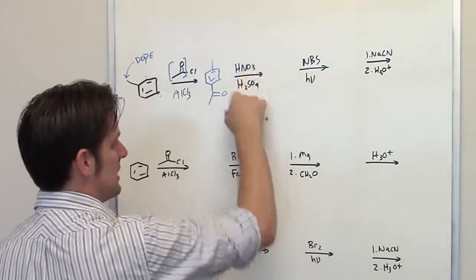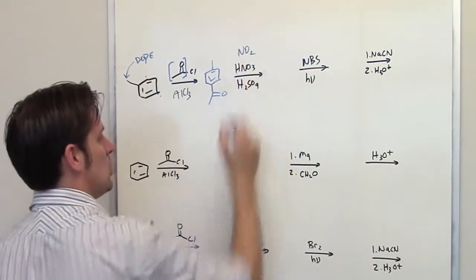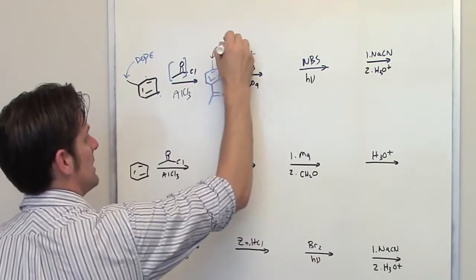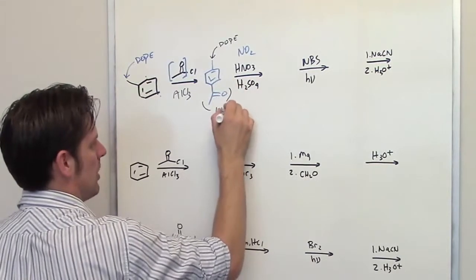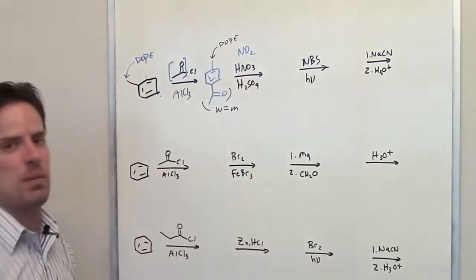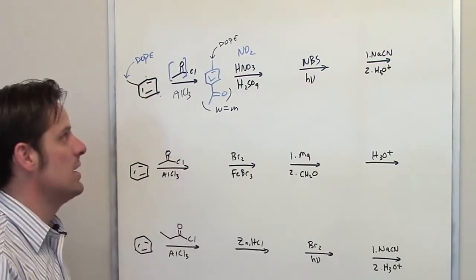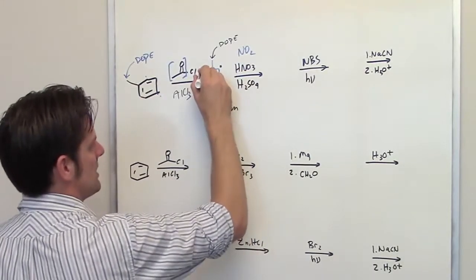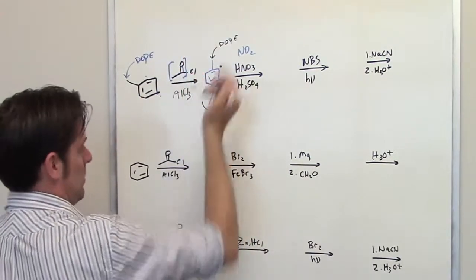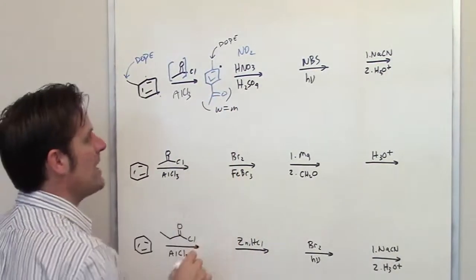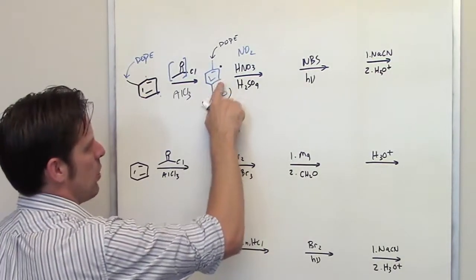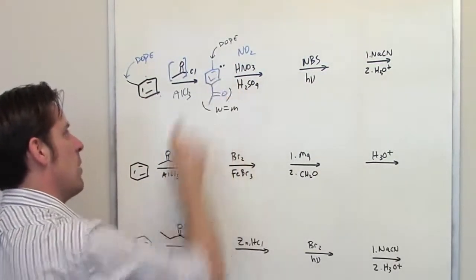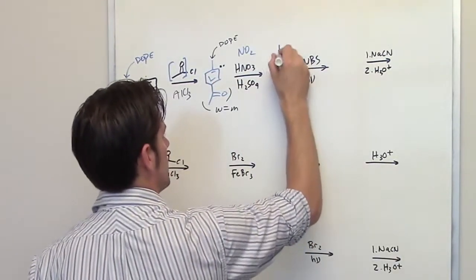Now I treat this intermediate with nitric acid and sulfuric acid, which places an NO₂ onto the ring. Where does it go? That depends on the pre-existing substituents. The methyl group is a donor — it directs ortho and para. The acyl group is a withdrawer — it directs meta. When there's competition between a donor and withdrawer, the donor always wins. Looking at both groups together, the position that is ortho to the methyl is also meta to the acyl group, meaning both substituents direct to the same position. So my final product of this reaction has the NO₂ placed at that position.